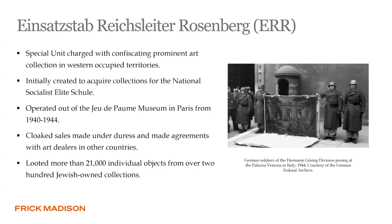The ERR operated out of the Jeu de Paume Museum in Paris from 1940 to 1944, where Nazi personnel filed, photographed, and packed collections for transport to Germany and Austria. In many cases, Hitler himself or a member of his inner circle would evaluate materials, while others were sold to buyers through collaborating dealers in neutral countries like Switzerland to raise capital. Overall, they looted more than 21,000 individual objects from Jewish-owned collections.